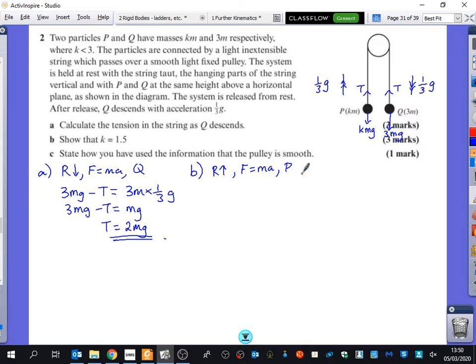So what's the resultant force for this one? T minus KMG. Yeah, it's T minus KMG because we're looking in the different direction. We're now going upwards. And that's equal to the mass, which is KM. Not KMG, but KM. And the acceleration, which is a third G.